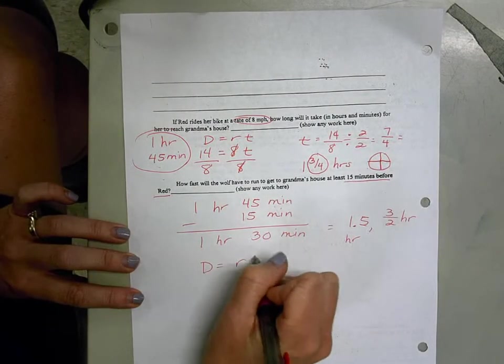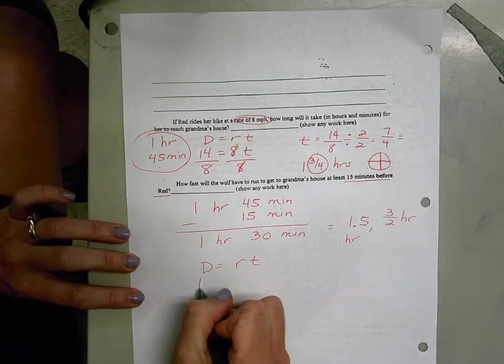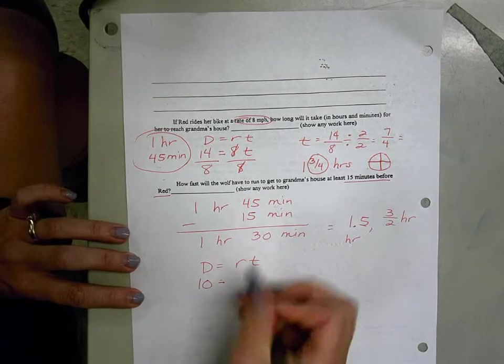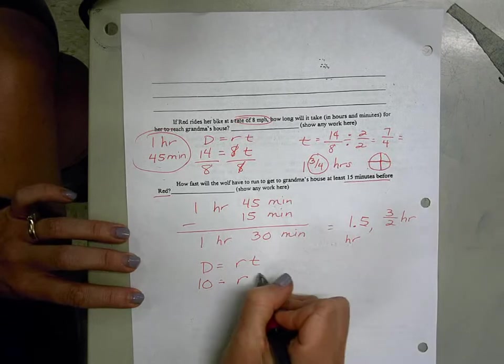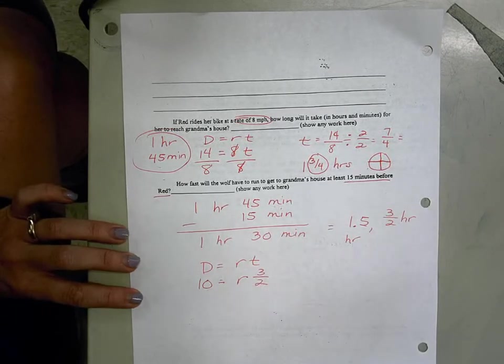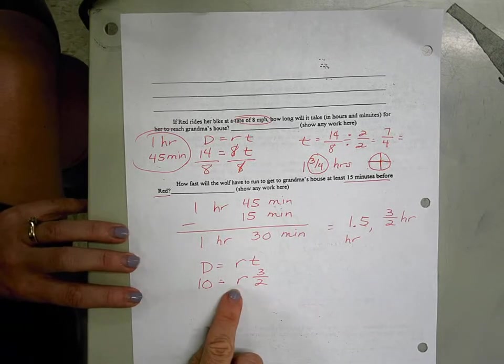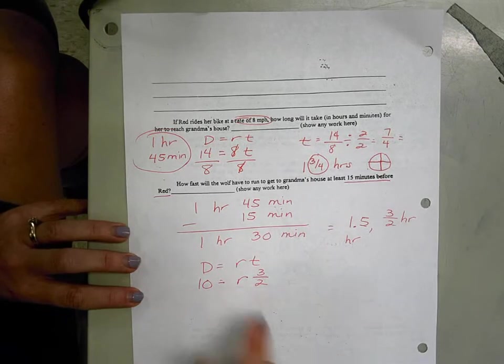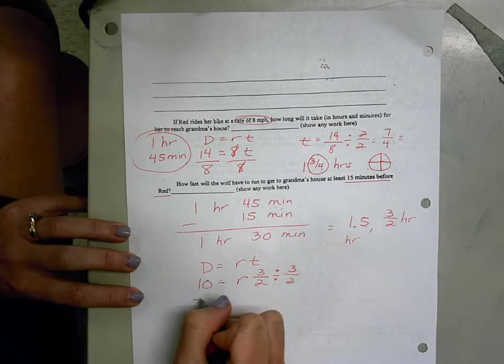Again, we're going to apply our distance formula. His distance we found by finding that hypotenuse. That was our 10 miles. We don't know how fast he's going to have to go. That's the rate, what we're trying to find. But we do know that he's traveling for 1 and a half hours. And then what I want to do here again is I want to isolate my variable. Right now, r is being multiplied by 3 halves. So I'm going to divide both sides by 3 halves.